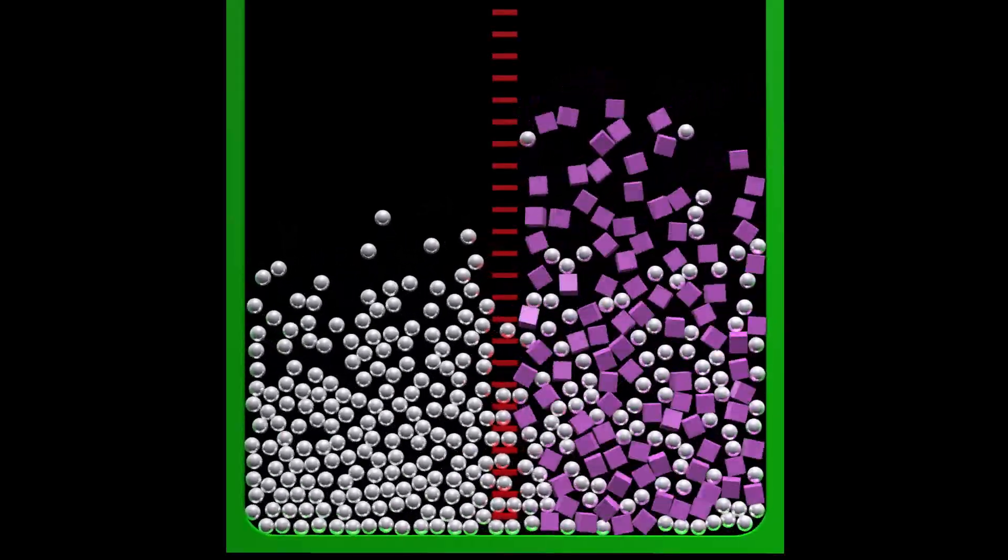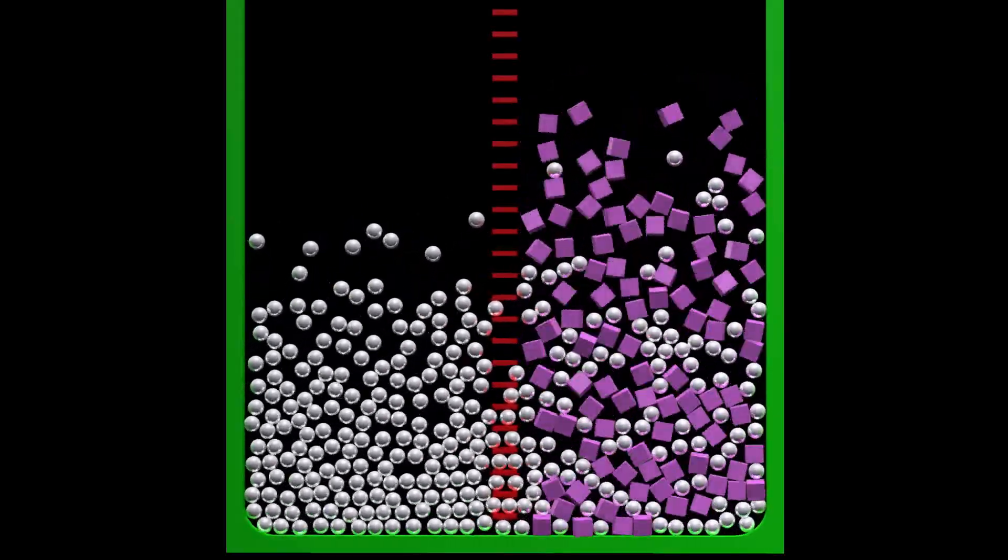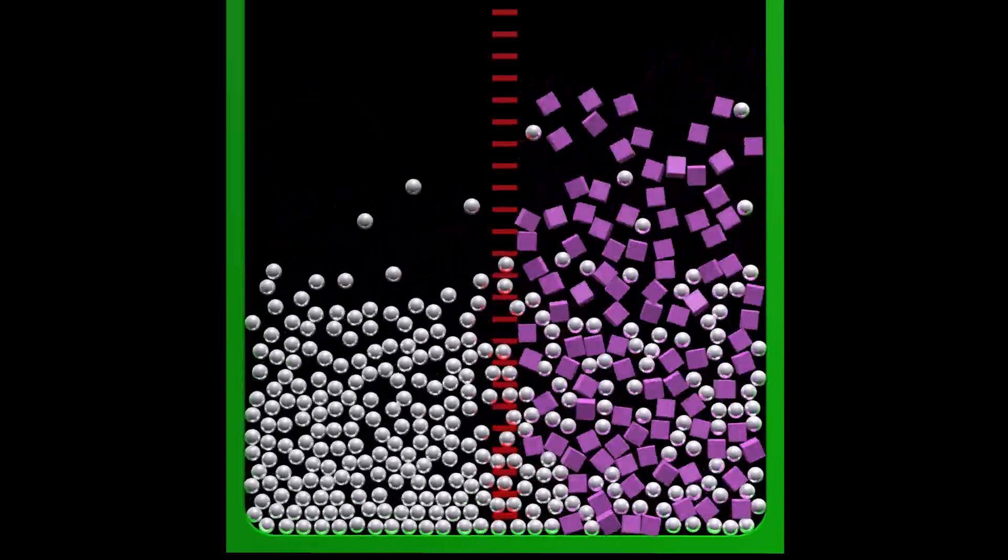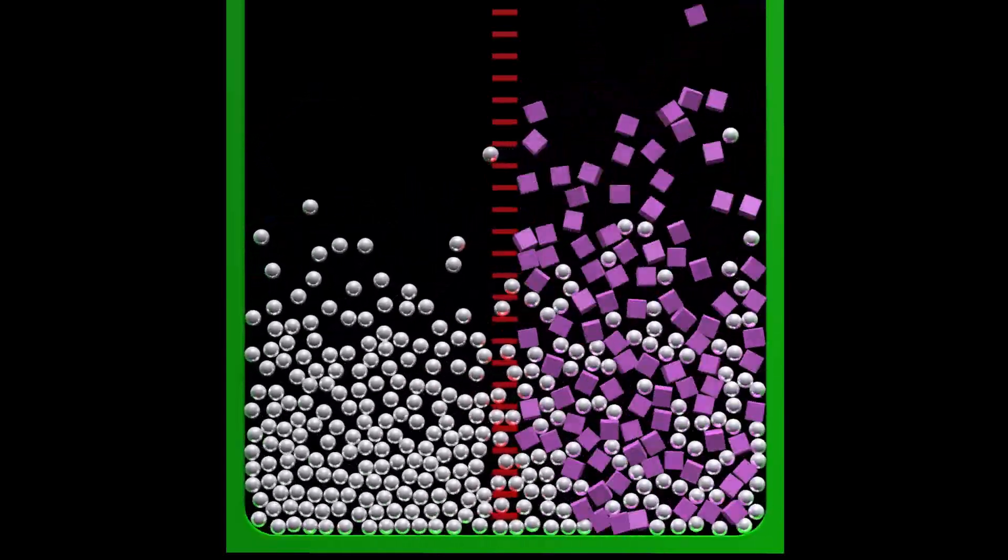All the square particles are stuck on the right side of the barrier. Notice how the particles on the right side rise to a greater height than the particles on the left side.